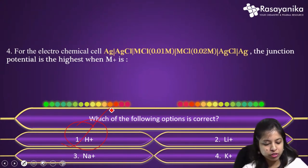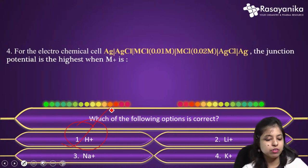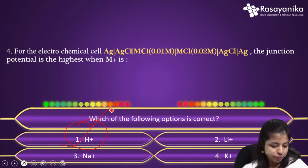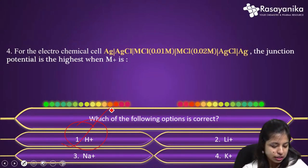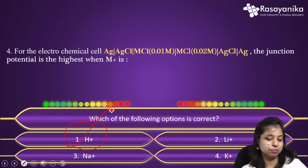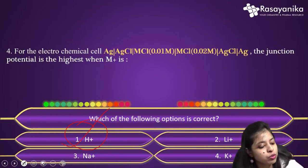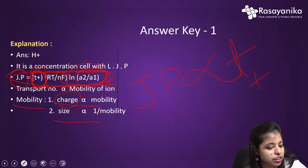As size decreases, mobility increases, so the transport number increases, and so does the junction potential. Among the options, H⁺ has the lowest size, so it will have maximum velocity and mobility, maximum transport number, and maximum liquid junction potential. Therefore option 1 — H⁺ — is the correct answer.